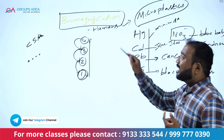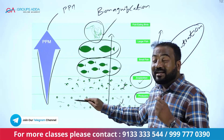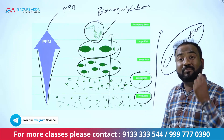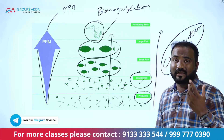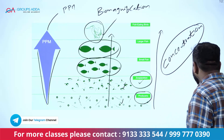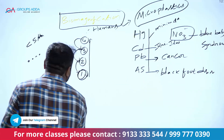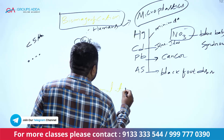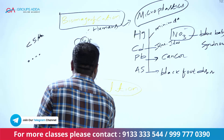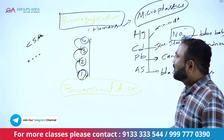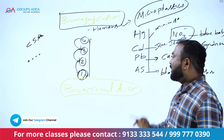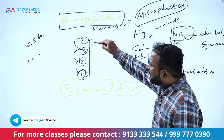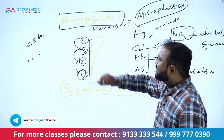Biomagnification means the increasing concentration of pollutants when it moves from one trophic level to a higher trophic level. The best example is mercury — the Minamata disease case. Two important terms to remember: biomagnification and bioaccumulation.